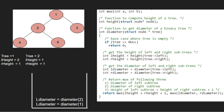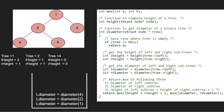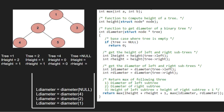First, the left child of 2 which is 4 is passed. Tree will now point to 4. We get the height of the left and right subtrees of 4. Since 4 is a leaf node, both the left and right subtrees will be equal to 0. Now we get the diameter of the left and right subtrees of node 4. Since the left child of 4 is null, null is passed. Since tree is pointing to null, we return 0.